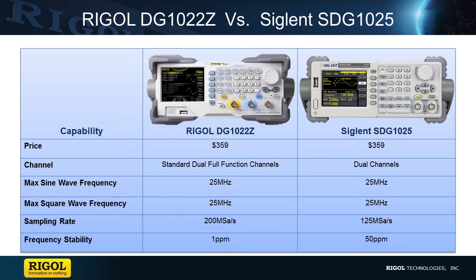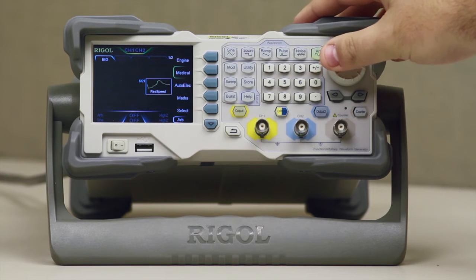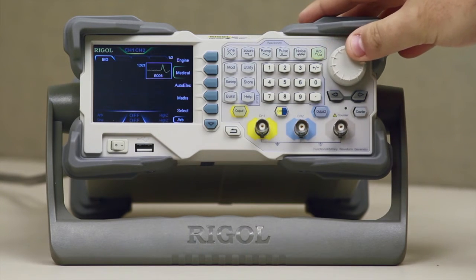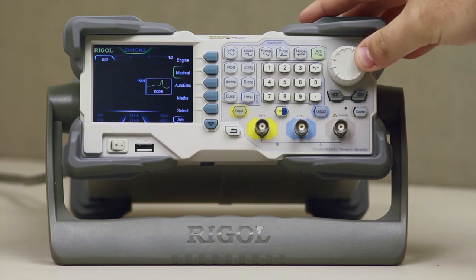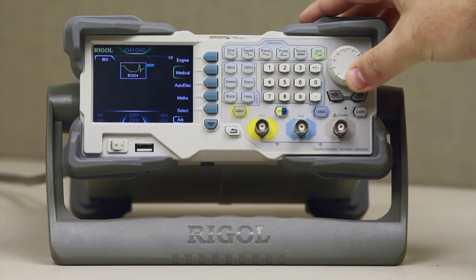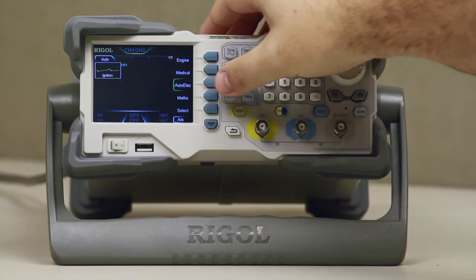The DG1022Z waveform generator uses 200 mega samples per second at 1 part per million, whereas the SDG1025 can produce 125 mega samples per second at 50 parts per million.